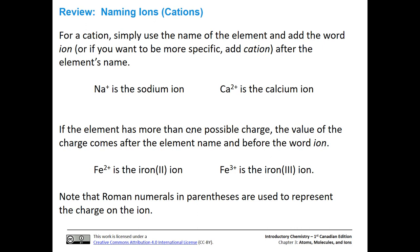For a cation, it's actually pretty simple. You're going to use the name of the element, and then add the word ion. So for instance, here we have sodium plus, so that's the sodium ion, or the sodium cation. Sodium is just the name of the element, and we've just added the word ion, or if we want to be more specific, we could add the word cation.